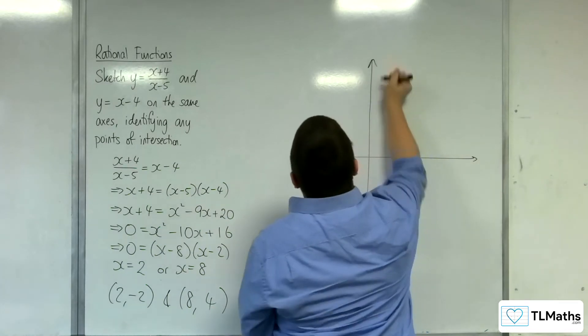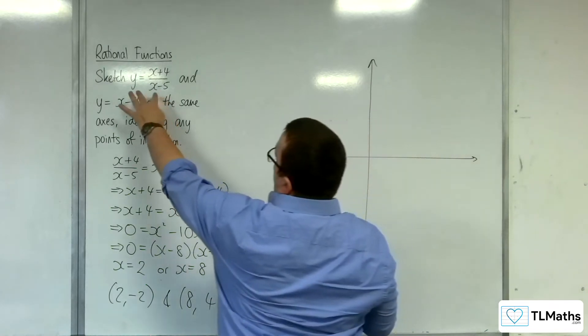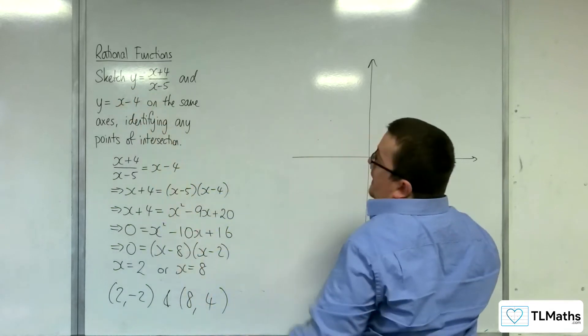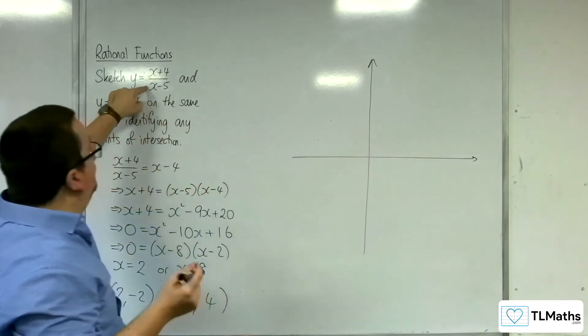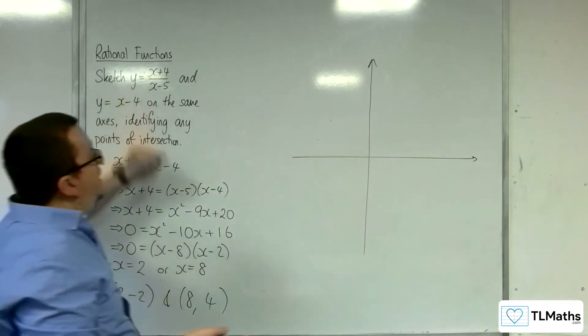Right, now for the sketch. So we're going to sketch this one first. So the vertical asymptote is what I'm looking for first. That's when the denominator is 0, so that's when x is 5.